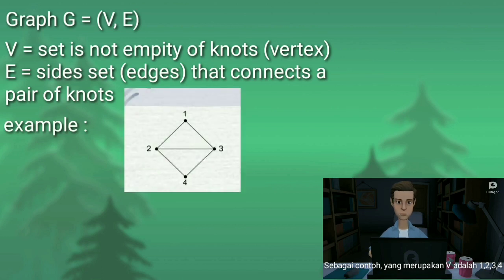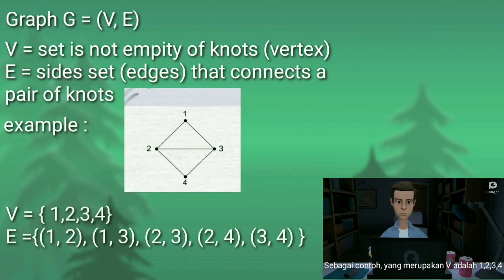For example, V is 1, 2, 3, 4, and E is (1,2), (1,3), (2,3), (2,4), (3,4).